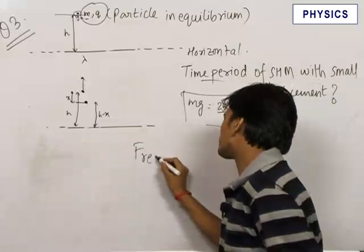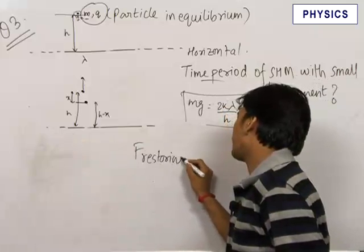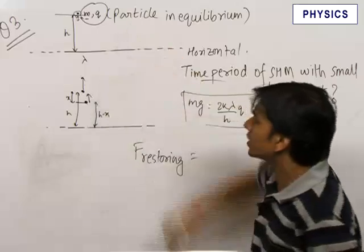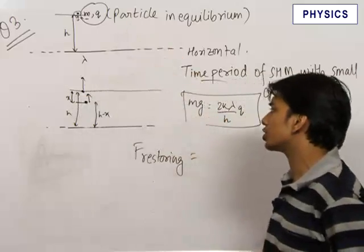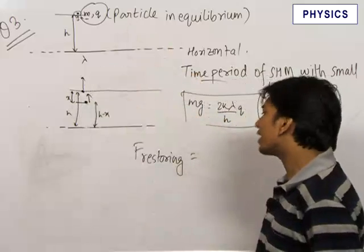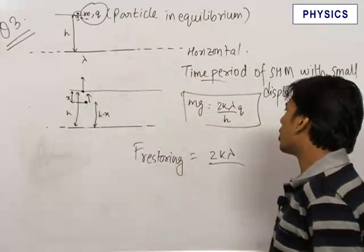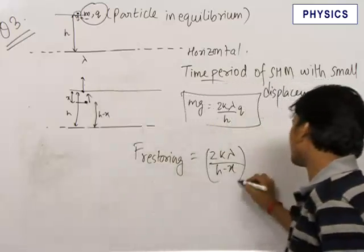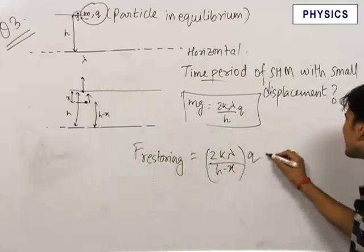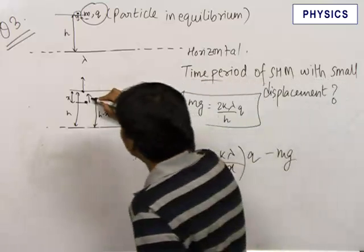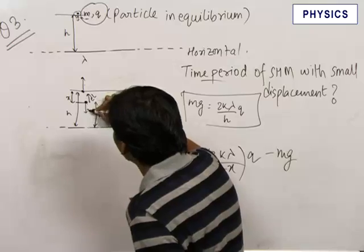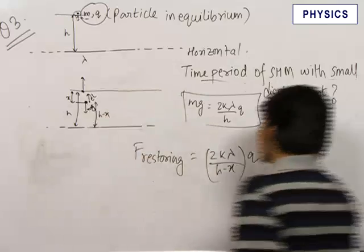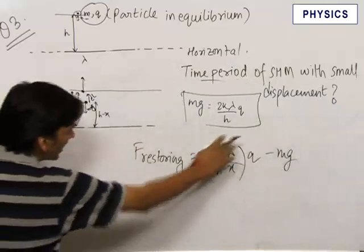We now need to find the restoring force — the net force taking the object back toward the equilibrium position. The electric force at height h minus x is 2k lambda upon (h minus x) into q, acting upward. The gravitational force mg acts downward. So the net upward force is 2k lambda q upon (h minus x) minus mg.